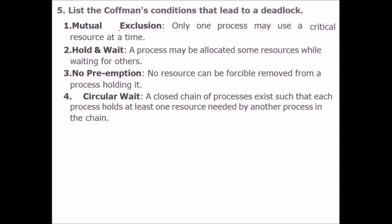List the Coffman's conditions that lead to deadlock. There are four Coffman conditions. First is mutual exclusion, meaning only one process may use a critical resource at a time. Hold and wait means a process may be allocated some resources while waiting for others.